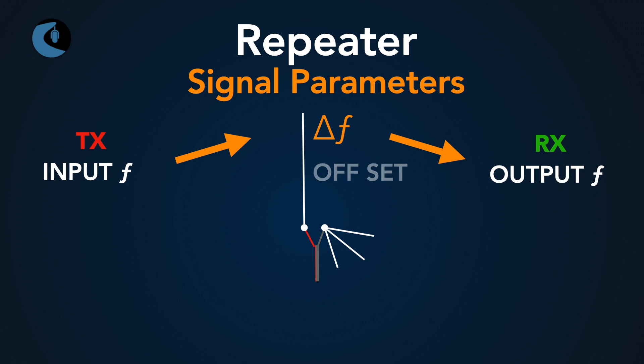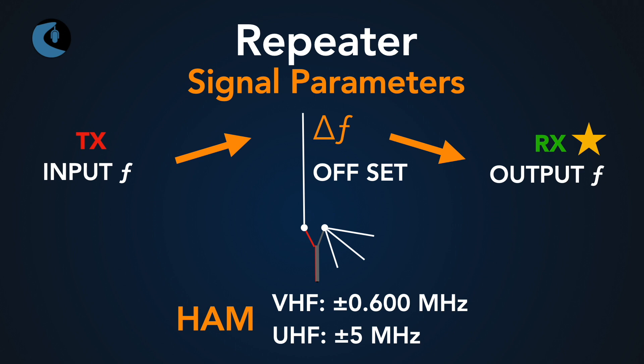You'll also have an offset frequency. By convention, the offset frequency is always focused on the output side — the receiving side — so you as the operator are the center of the world as far as the data is presented. On the ham side, for VHF frequencies, you generally have plus or minus about 0.6 megahertz (600 kilohertz) as the offset. On the UHF side, by convention, it's generally plus or minus five megahertz.